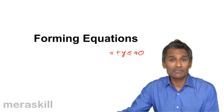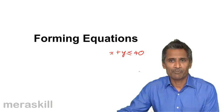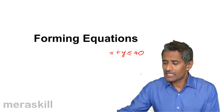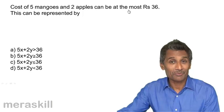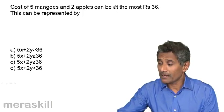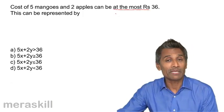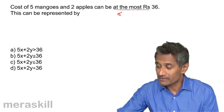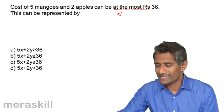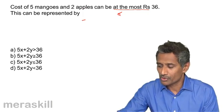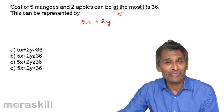Let's go into real examples which will help us understand how to form equations for practical cases in daily life. Cost of five mangroves and two apples can be at the most rupees 36. When we say at the most rupees 36, it cannot cross 36, which means it is either less than or equal to 36. If we take the cost of each mangrove as x and each apple as y, the total cost is 5x plus 2y.